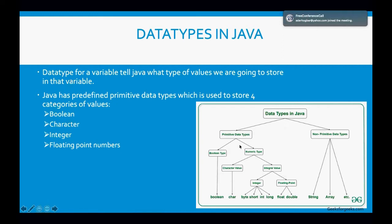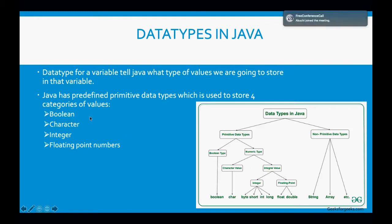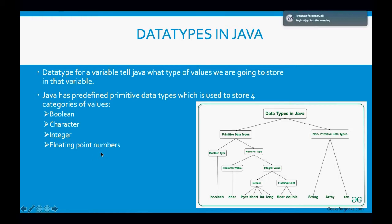For this particular class, we are going to be looking into the primitive data types, which are boolean types, character value, integer, and floating points. So we've got four categories: boolean, character, integer, and floating points.